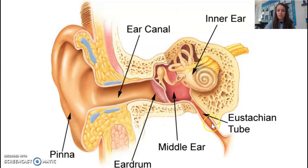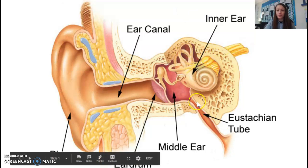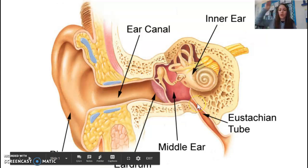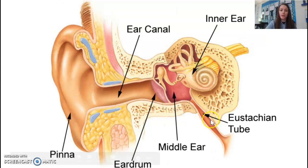The Eustachian tube helps us sense and manage air pressure. That's where the popping feeling in your ear comes from — whether you're going up high in an airplane or going down low, that pressure change is felt through the Eustachian tube.